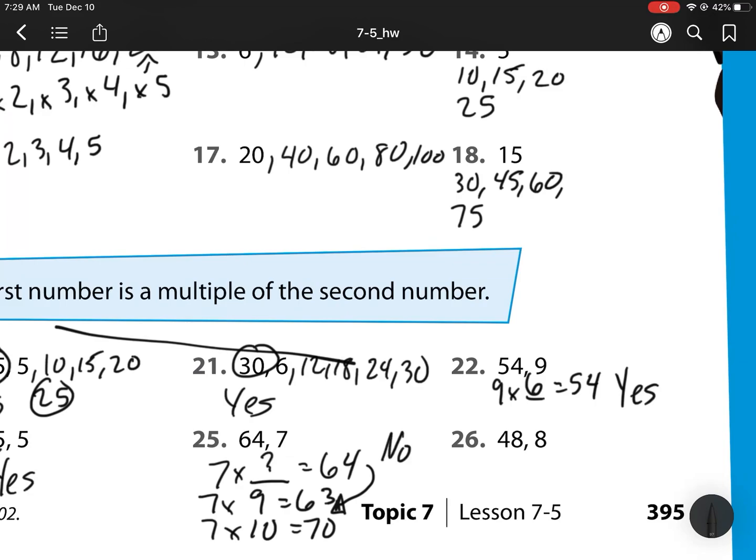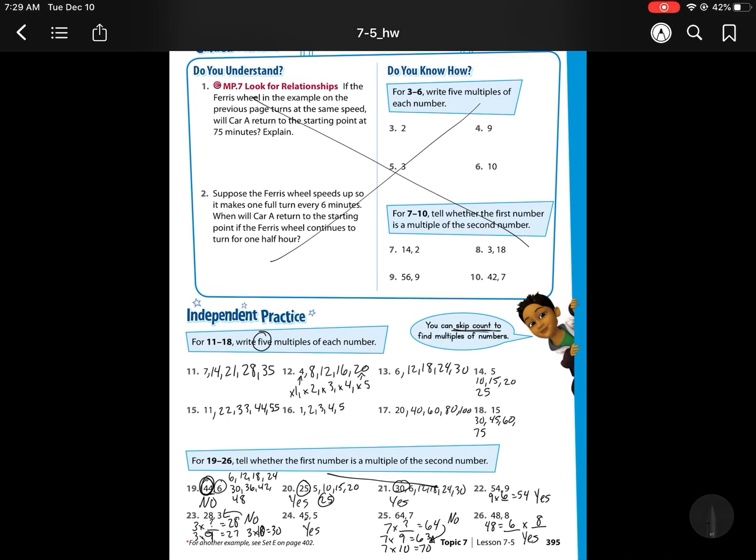My last one, 48 times 8. Or, 48 and 8. We're thinking 48 equals what times 8? Well, I know 6 times 8 is 48 since I know my multiplication facts. So, this one is a yes. Let's head on to our next page now.